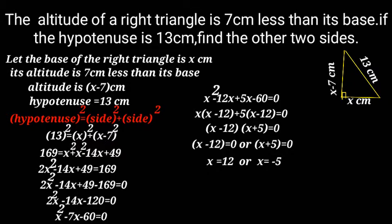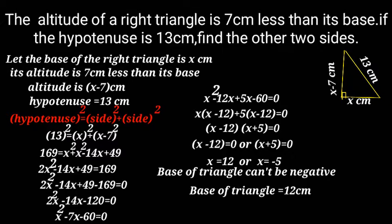x equals 12 or x equals minus 5. Since the base of a triangle cannot be negative, the base of the triangle equals 12 cm. The altitude of the triangle equals 12 minus 7, which equals 5 cm.